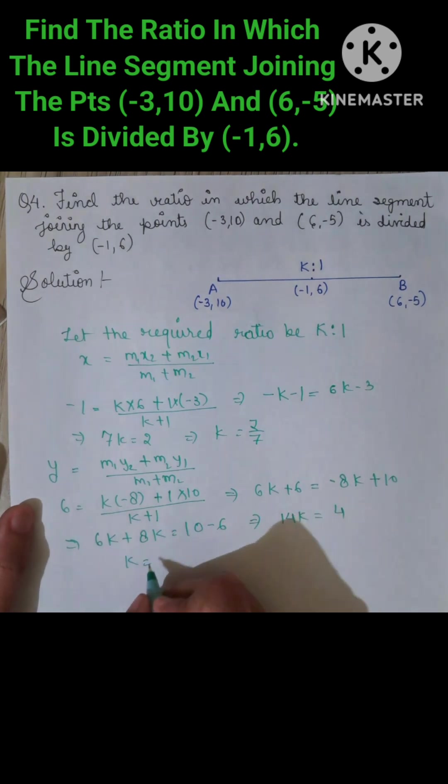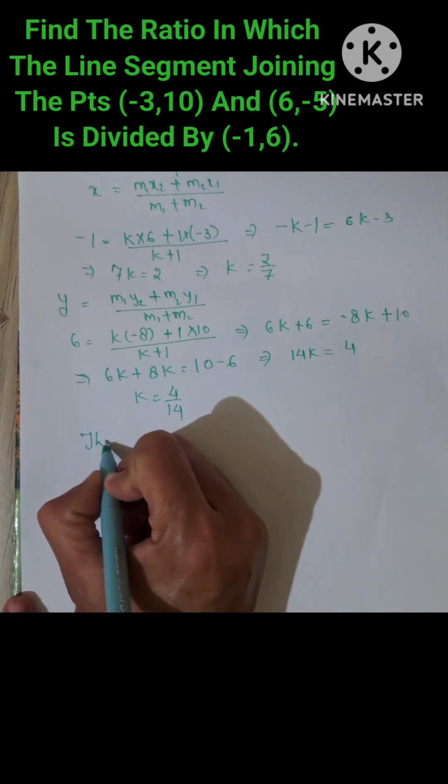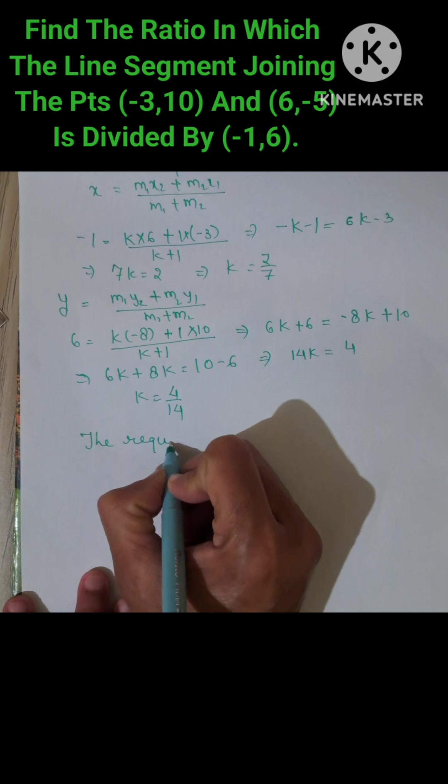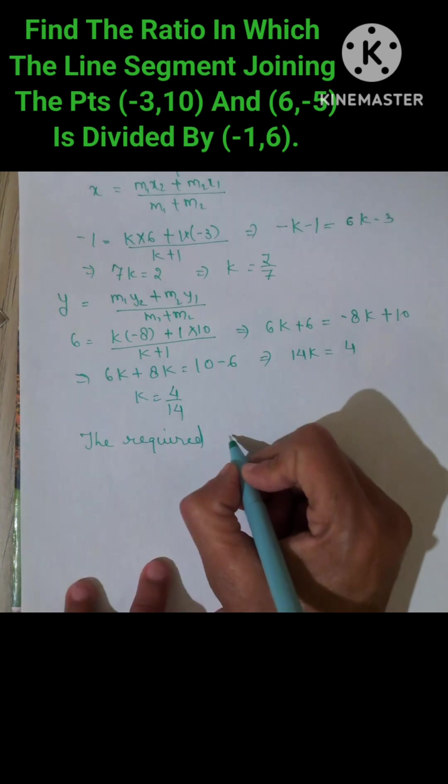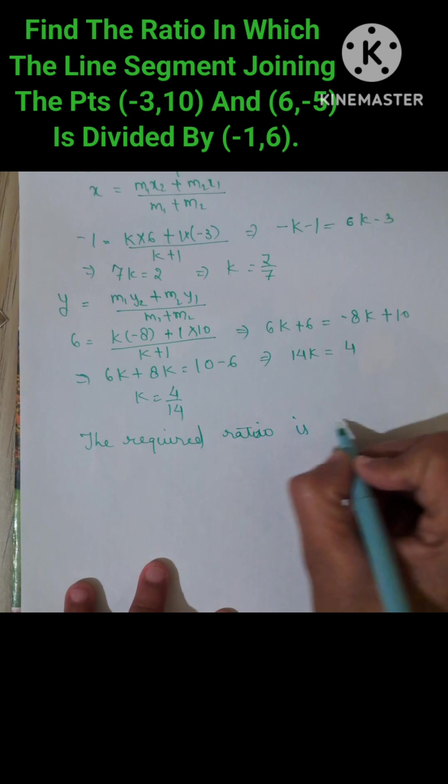So K equals 4/14, which simplifies to 2/7. The required ratio is 2:7.